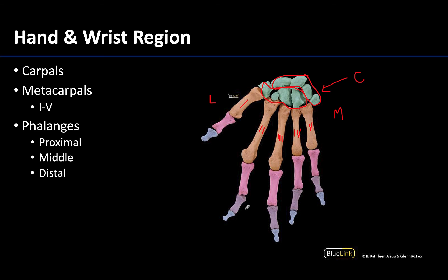There are three types of phalanges named based on relative location. Shaded in pink are the proximal phalanges, numbered in the same scheme as the metacarpals. In light purple are the middle or intermediate phalanges. Notice that there is no intermediate or middle phalange in the first digit — that is why there are 14 phalanges rather than 15.